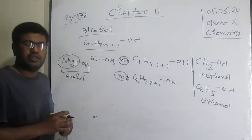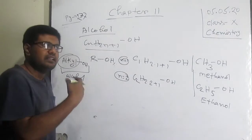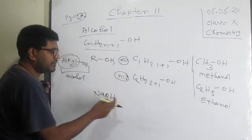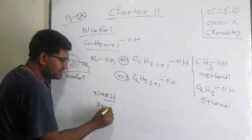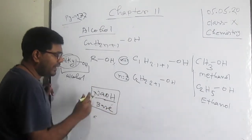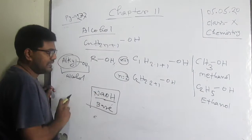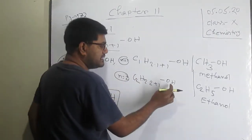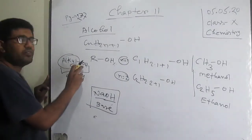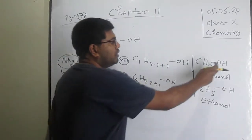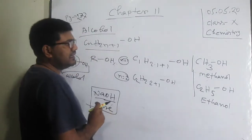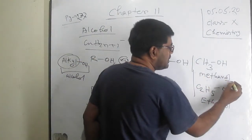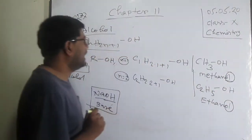You may ask: if OH is written at the later part of a formula, is it an alcohol? No — sodium hydroxide (NaOH) has OH written at the end, but this is a base, not an alcohol. Why? Because this OH is attached with a metal. If OH is attached with an alkyl group, then those are called alcohols, like methanol and ethanol. The last two letters of an alcohol name are '-ol'.